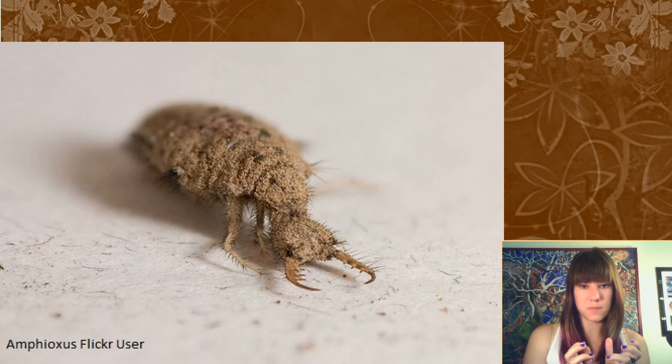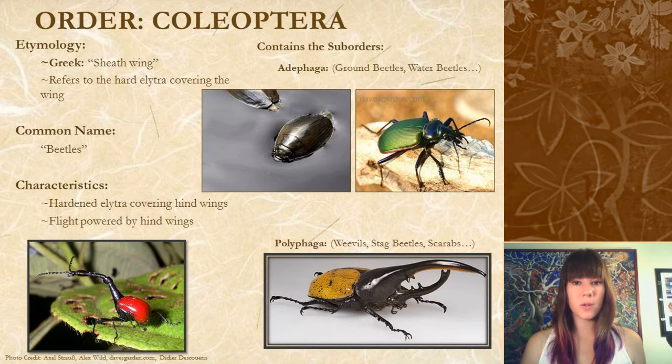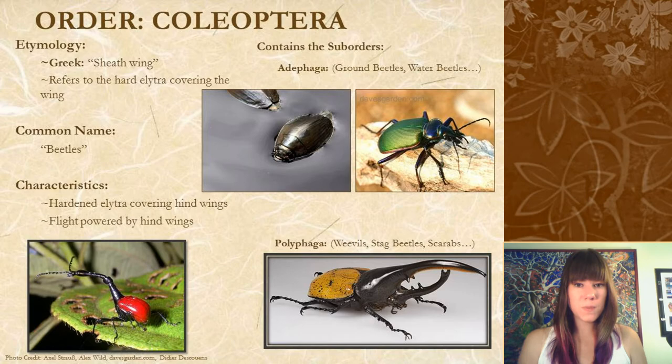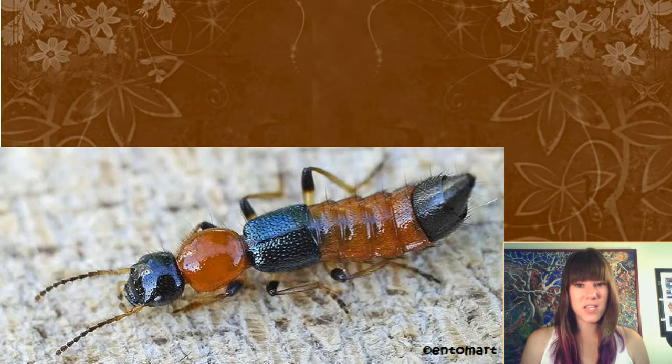The next group is Coleoptera — in Greek, Coleoptera means 'sheath wing.' These are your beetles, and their characteristic feature is the hardened elytra that cover the hind wings. There is one family, the Staphylinidae, which can look similar to earwigs because they have really, really reduced elytra to the point that it doesn't even look like they have any.